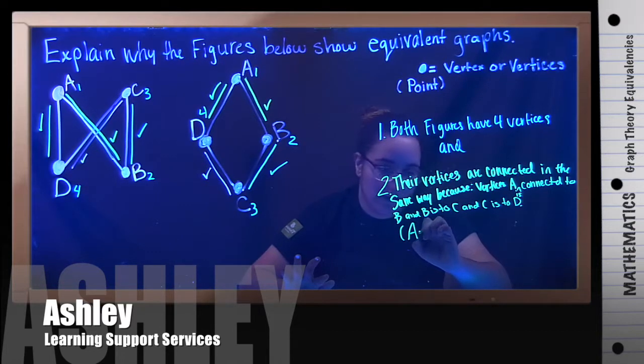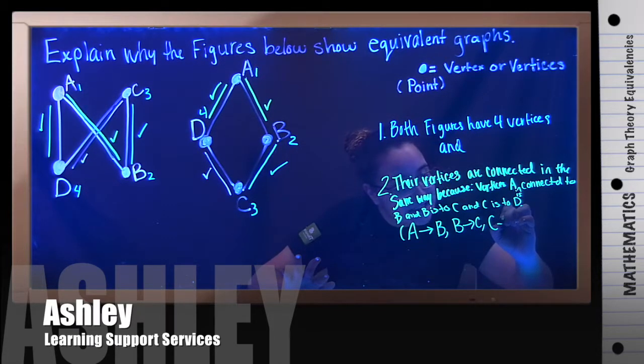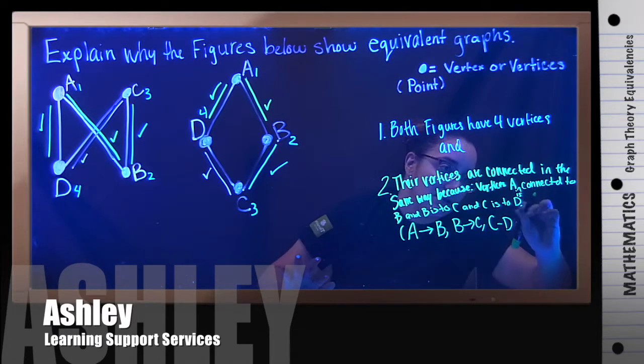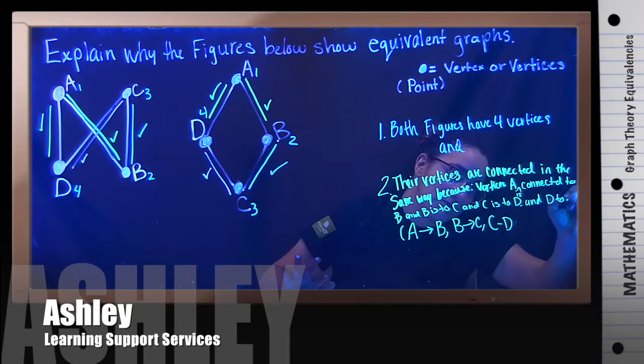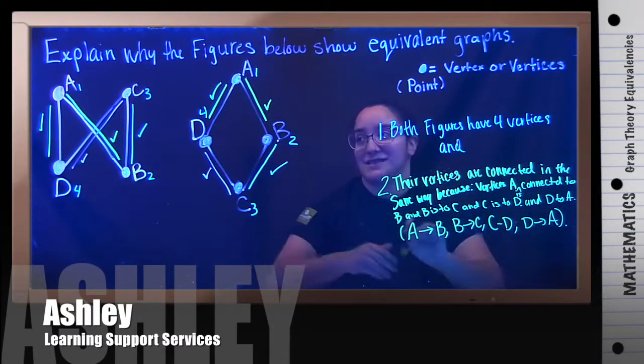All you're saying is: A is connected to B on both, B is connected to C on both, C is connected to D on both, and D to A. You're going to write 'D connects.' That is pretty much all you're saying here, and that's how you solve this problem.